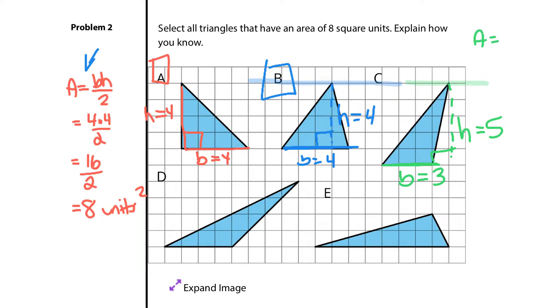Don't automatically dismiss that though. If area is equal to the base, 3 times the height, 5, divided by 2. I would get 15 divided by 2, which is 7 and a half square units. That's not 8, so it's not C.